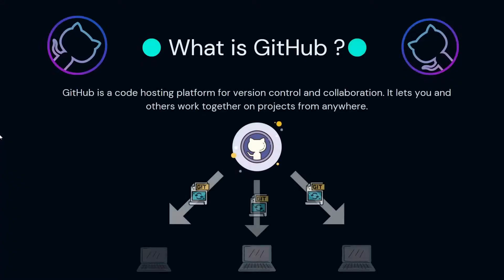What is GitHub? In simple words, GitHub is a code hosting platform for collaboration. You can host your code on GitHub very easily, and many developers can do the same. GitHub is widely used in open source contributions.